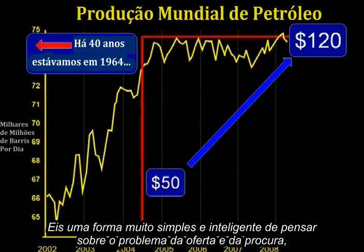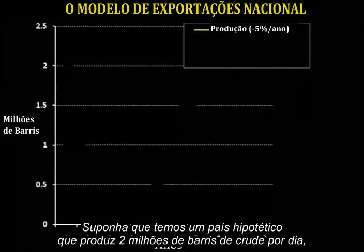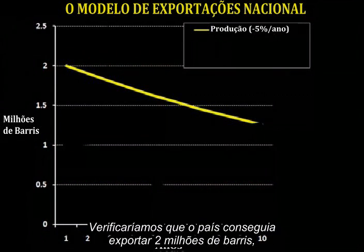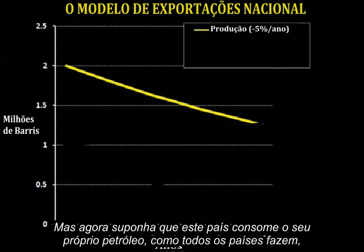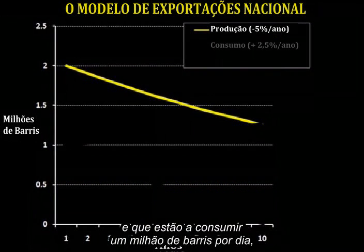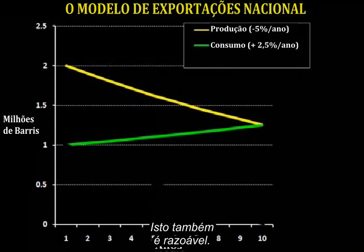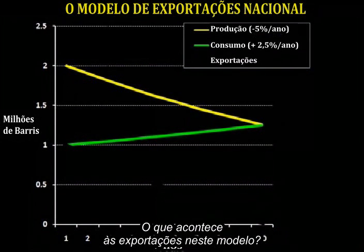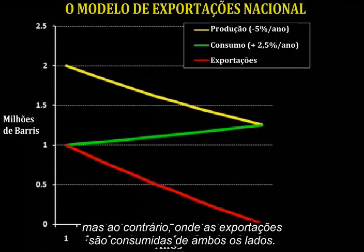Here's a very simple and clever way to think about the supply and demand problem, developed by a Dallas geologist named Jeffrey Brown, which he calls the Export Land Model. Suppose we have a hypothetical country that produces 2 million barrels of crude a day, but that is declining at 5% a year. We'd note that after 10 years, they would still be able to export 1.25 million barrels a day — this seems manageable. But now suppose this country uses oil themselves, consuming 1 million barrels a day, and this internal demand is itself increasing at 2.5% a year. This is also reasonable. What happens to exports under this model? They go to zero in 10 years. This is the miracle of compounding, but in reverse, where exports are eaten into from both ends.